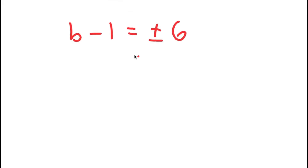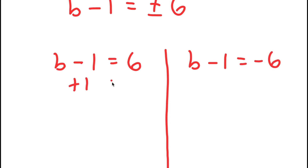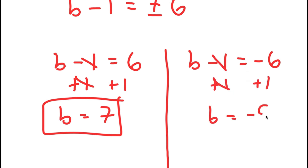So this gives me two equations. I get B minus one is equal to positive six and B minus one is equal to negative six. For B minus one equals positive six, I can add one on both sides and I get B equals seven. And for B minus one equals negative six, I can again add one on both sides and I get B equals negative five.